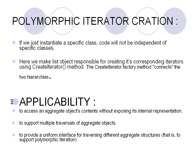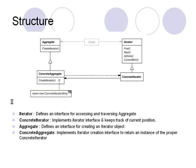The applicability is that the client can access aggregate objects without exposing their internal representation. Multiple traversals of aggregate objects are possible and a uniform interface is provided. In the structure, we have an aggregate and an iterator — the aggregate defines an interface for the client to create an iterator object, while the iterator defines an interface to access the elements. The concrete iterator implements all iterator functions, and the concrete aggregate implements all aggregate functions and returns the concrete iterator instance.